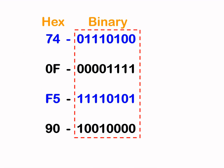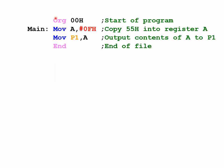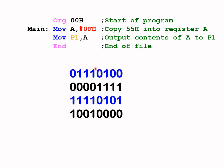Each hex code is then translated into its binary equivalent. For example, 74 in hex would be 0111 0100 in binary. If you're rusty on hex to binary conversion, you may want to watch my video on that topic. Each instruction is a set of binary numbers, and this is what the CPU actually understands — not the assembly language mnemonics.